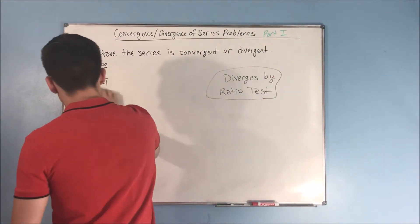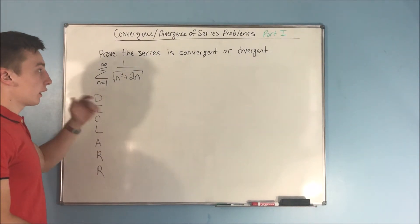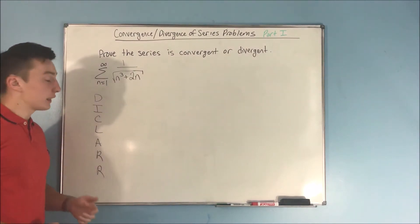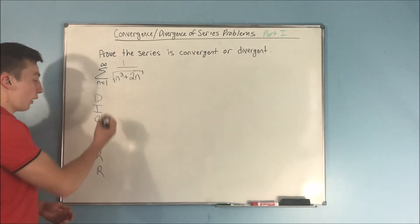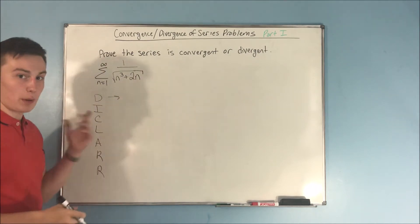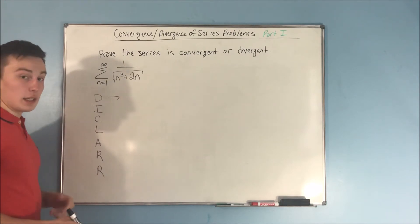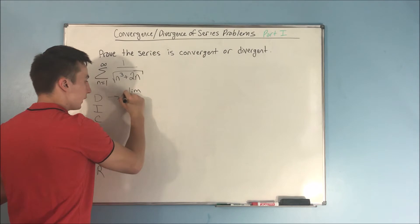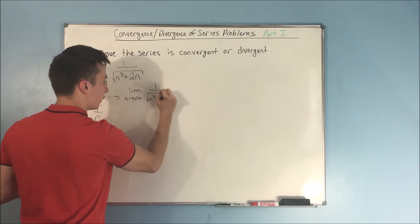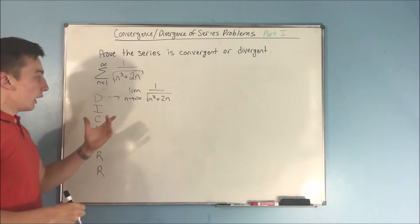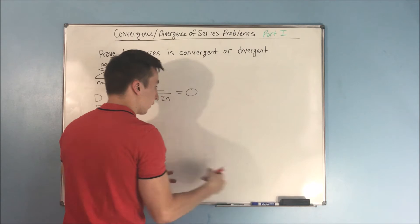Now we have our next problem: we want to prove that the series — the sum from n equals 1 to infinity of 1 over the square root of n cubed plus 2n — is convergent or divergent. We know it's not geometric or a p-series, so we go right to our checklist. Divergence test: the limit as n approaches infinity of 1 over the square root of n cubed plus 2n gives an infinitely large denominator, so it equals 0. The divergence test tells us nothing.